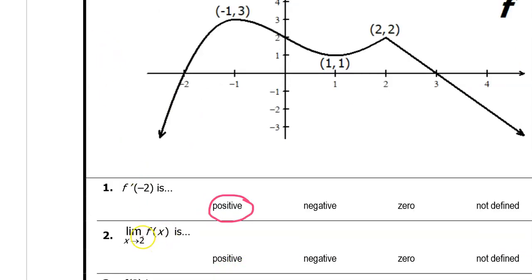Problem number two: the limit of f of x as x approaches two is? Here is the x value of two. When we talk about the limit as x approaches two, we are talking about the y value that we are approaching as we get closer and closer to an x value of two. We can see that we are getting closer and closer to a y value of positive two, so this limit is positive two.